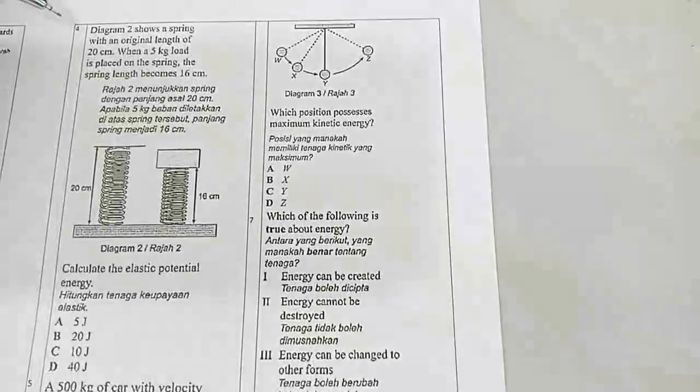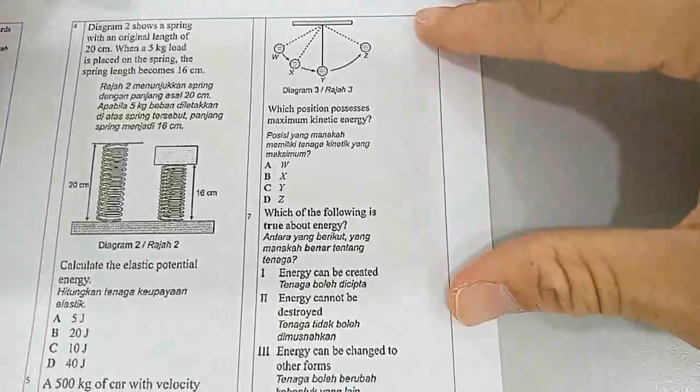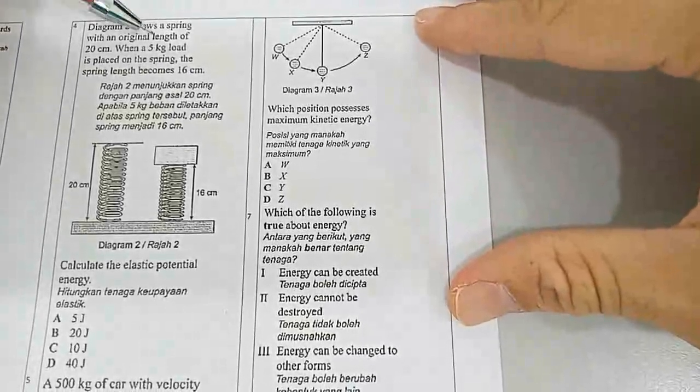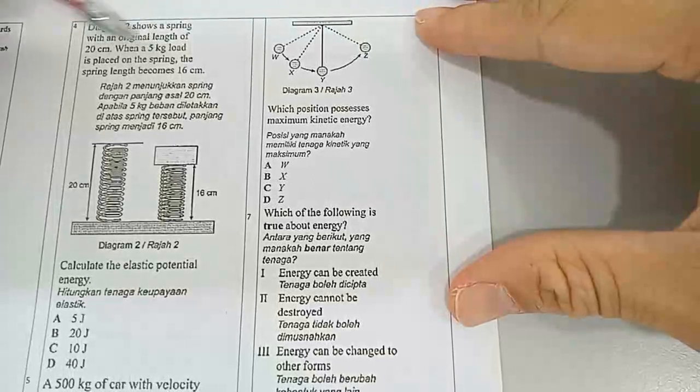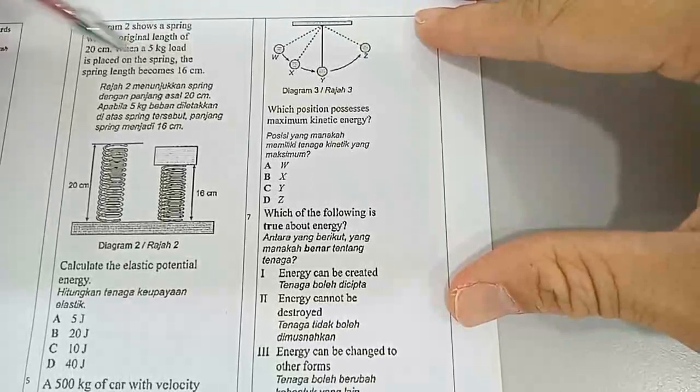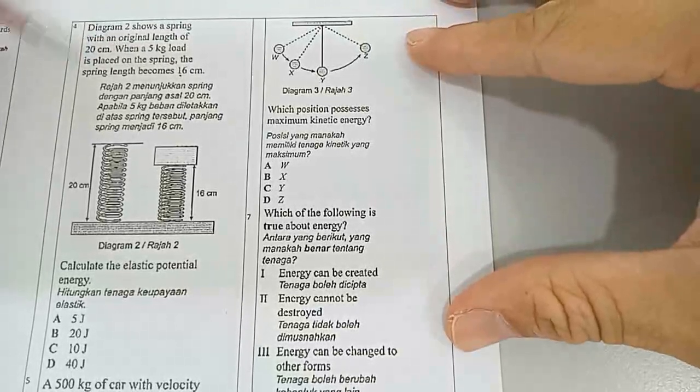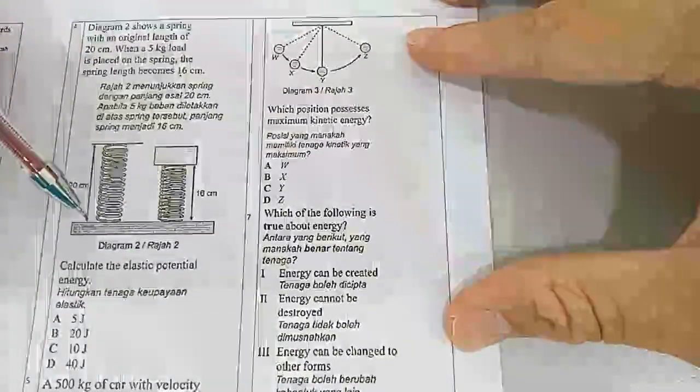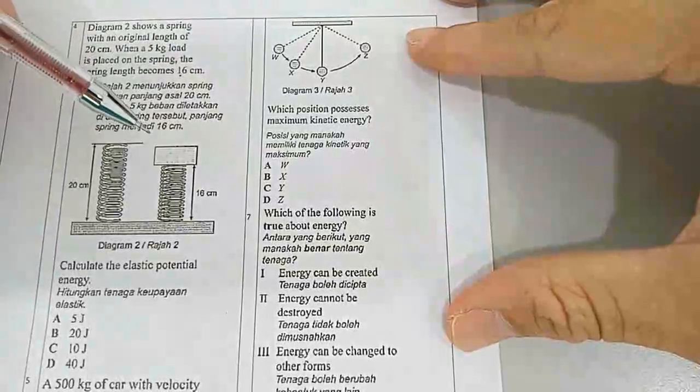Okay, let's continue with number four. Diagram 2 shows a spring with an original length of 20 centimeters. When a 5 kilogram load is placed on the spring, the spring length becomes 16 centimeters. So at first it's 20 centimeters. When you put a 5 kilogram load, it becomes 16 centimeters.